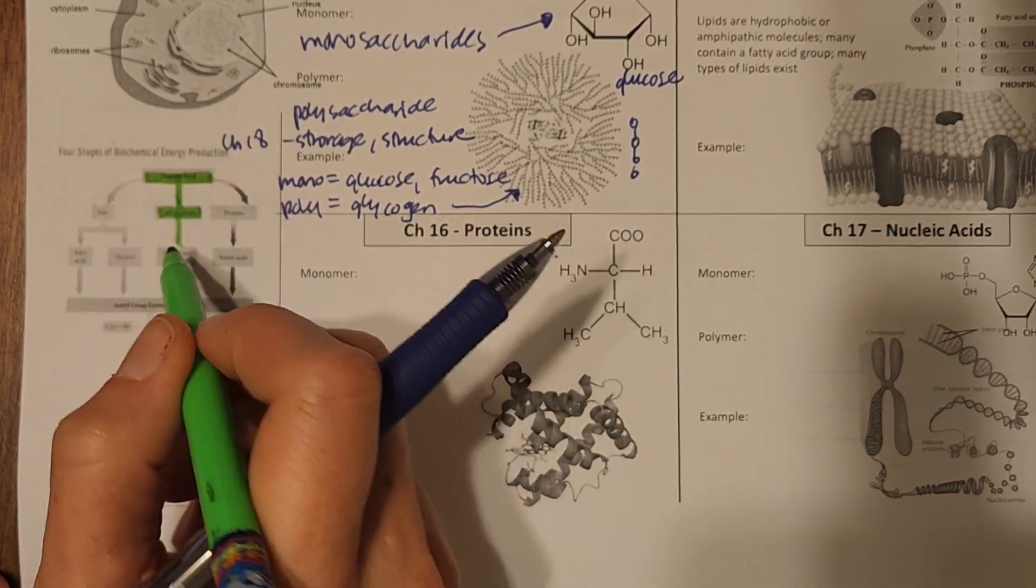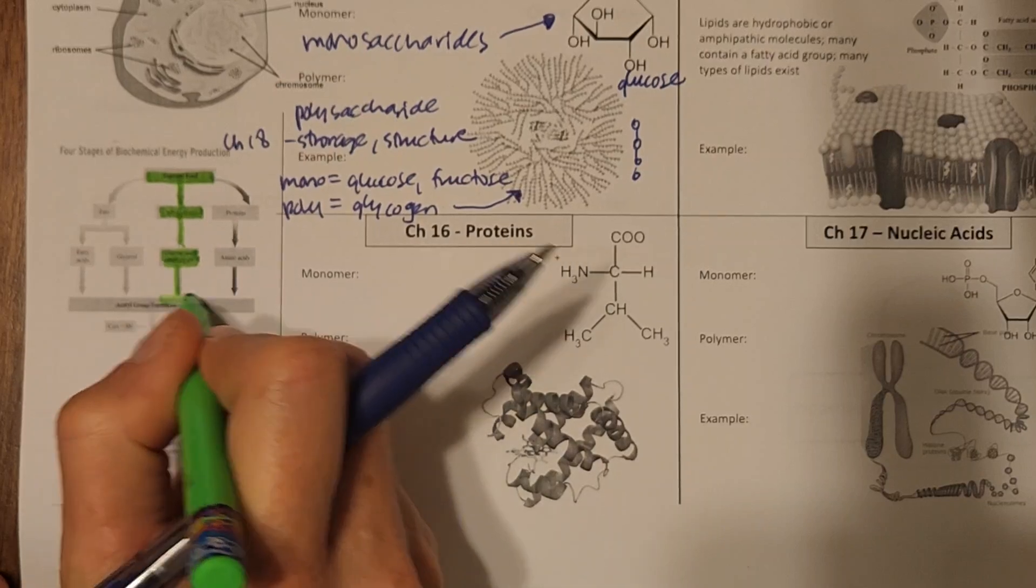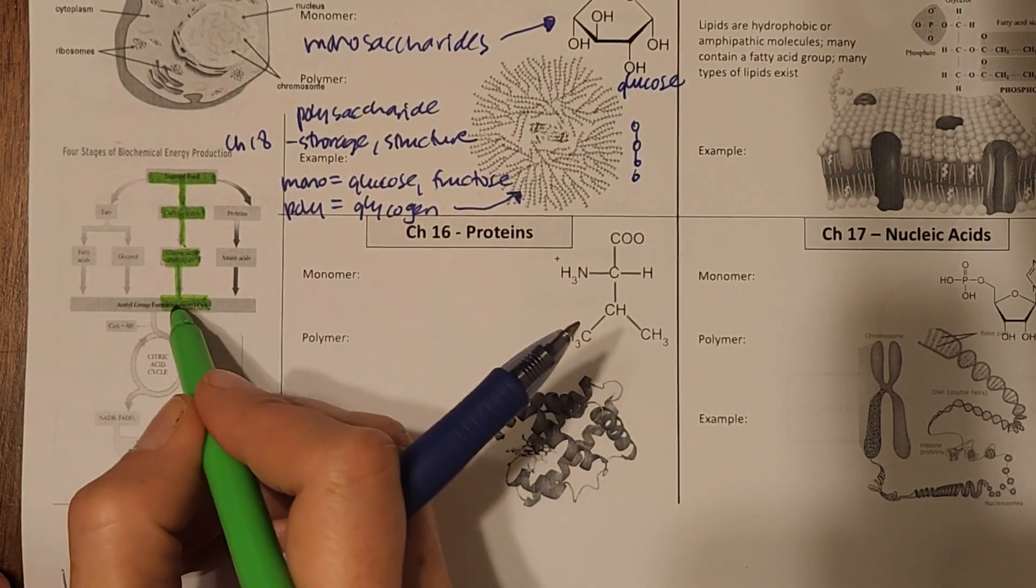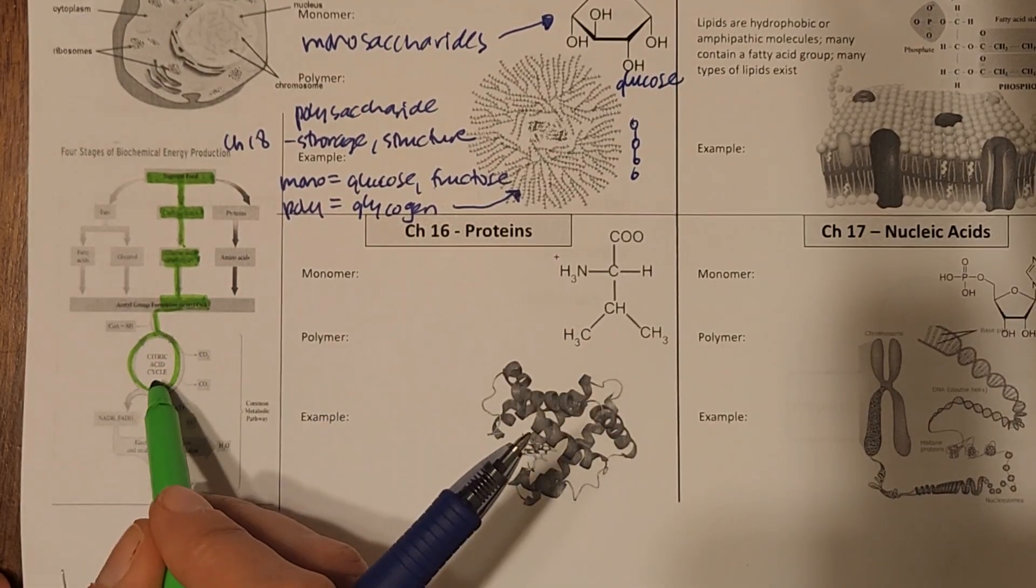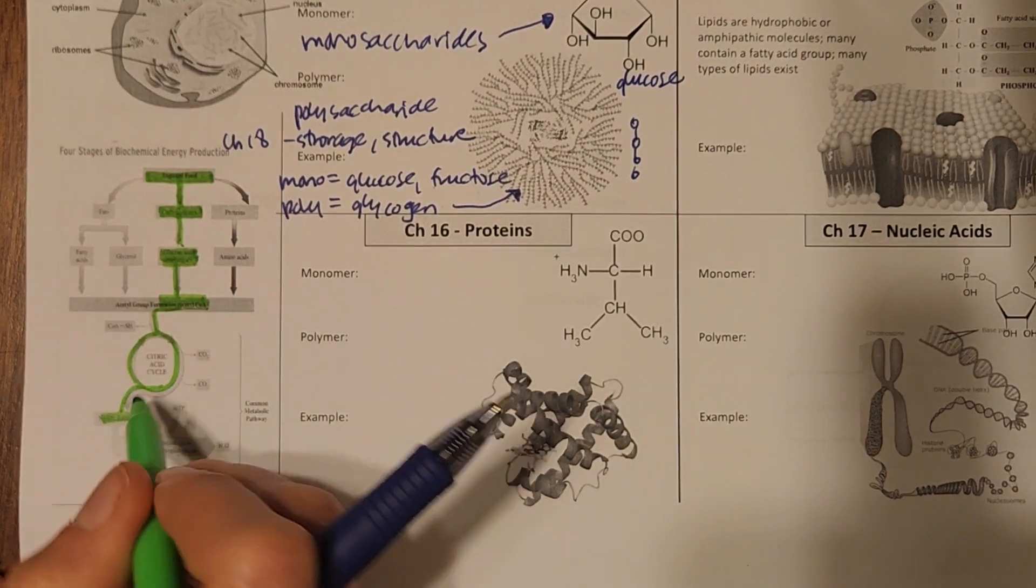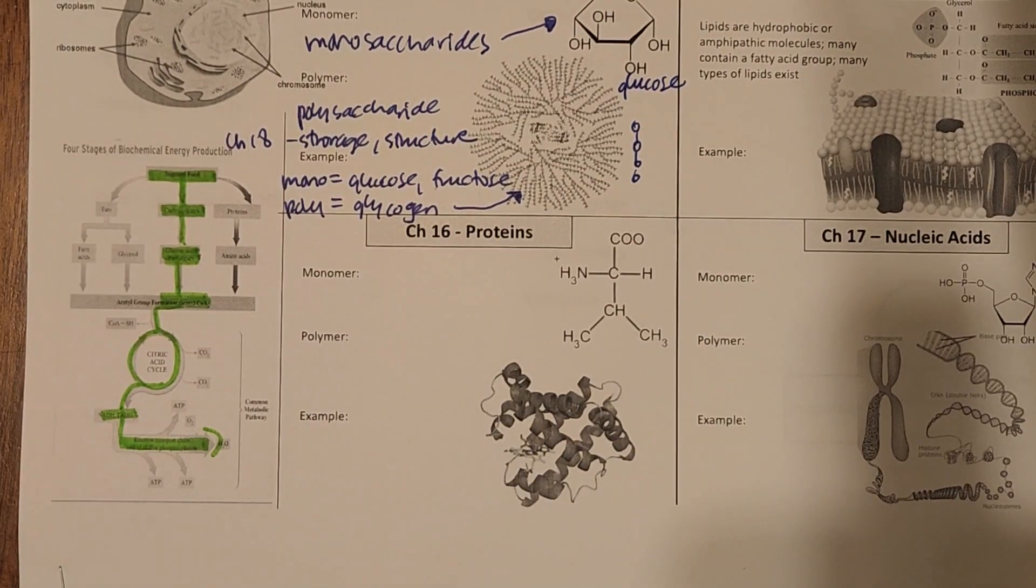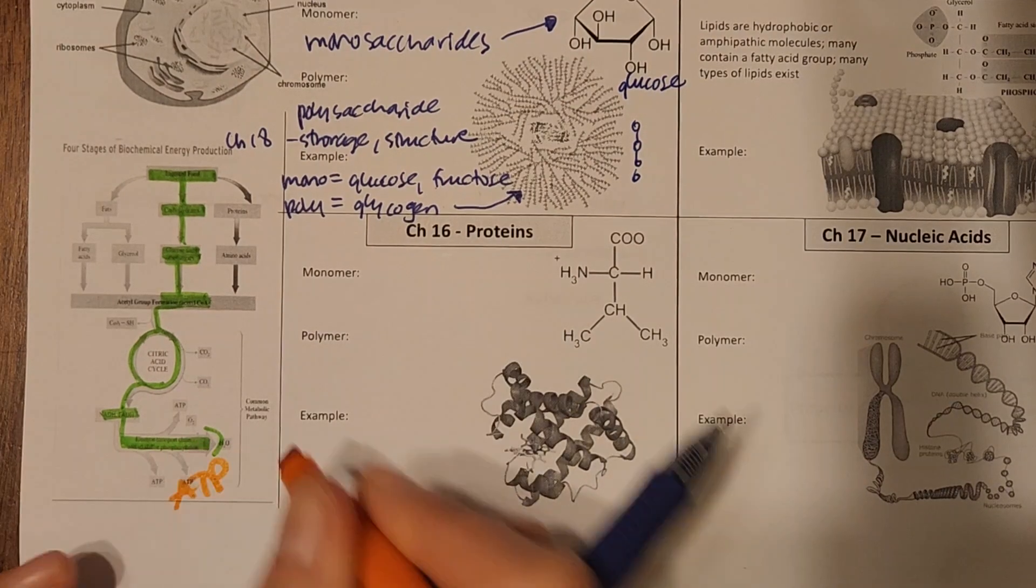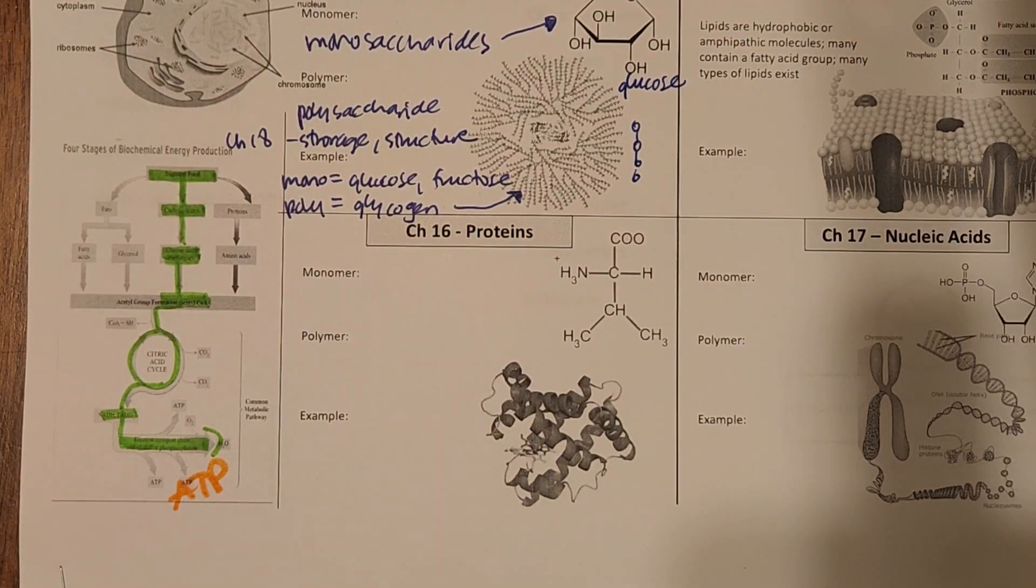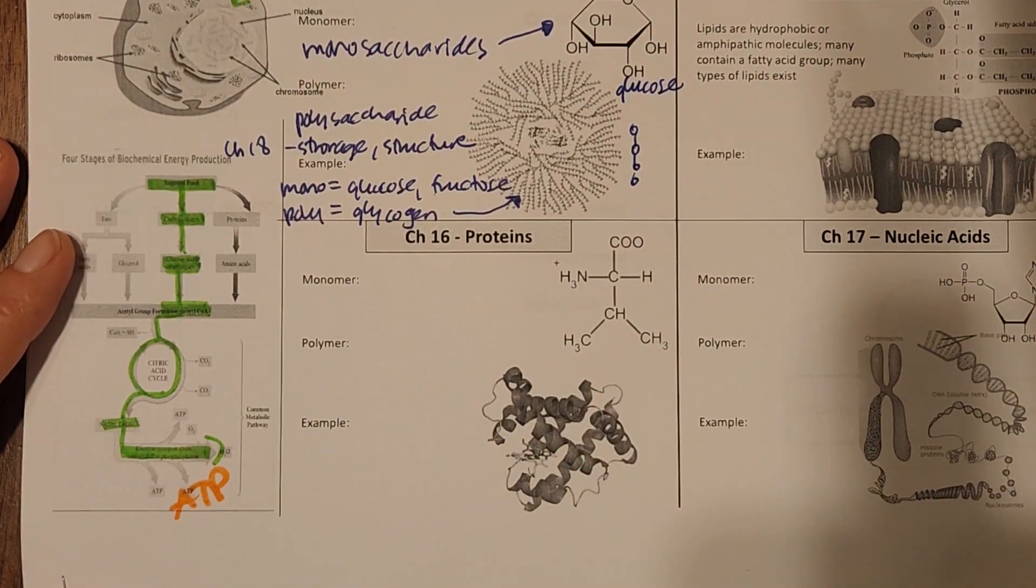So carbs get broken down into glucose and other sugars, continue, get broken down into what we call acetyl groups, go through the common metabolic pathway, which is the citric acid cycle, continue, and then eventually at the end of all of this, we get a whole bunch of ATP. And we get on average more than half of our energy from carbohydrates. So this is a big deal for our carbs here. It's kind of following through the pathway.